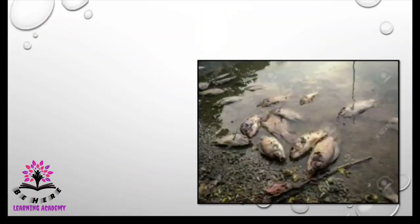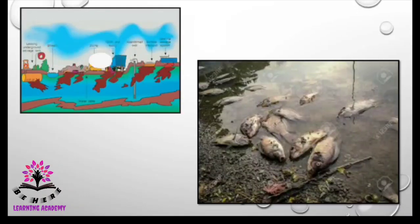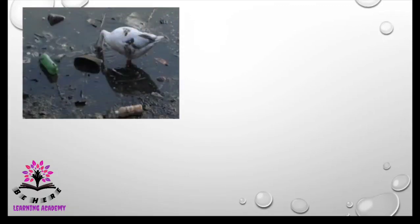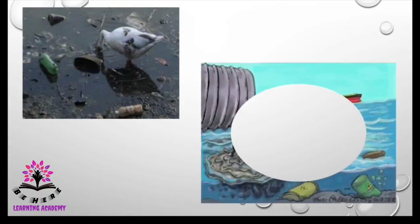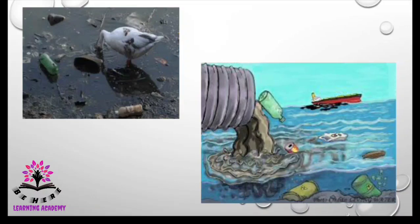What happens if there is water pollution? All the aquatic animals living in the water will die. You can see in the images the death of fish, because the water is polluted. Even birds — if birds drink that impure water, they will die.